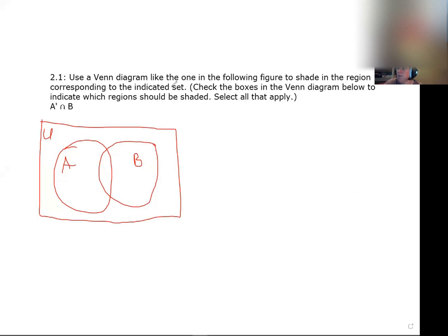Okay, so we are using a Venn diagram to shade the region indicated, so we've got A prime intersect with B. When I do these types of problems, I do them in steps.